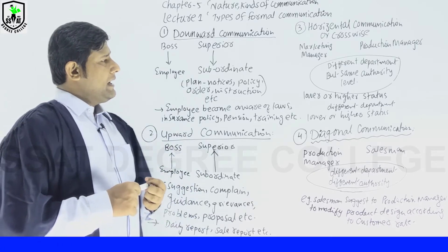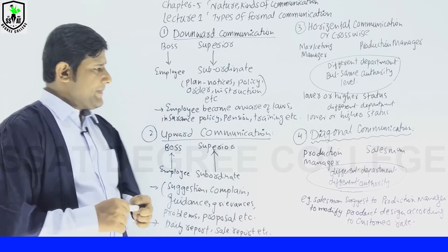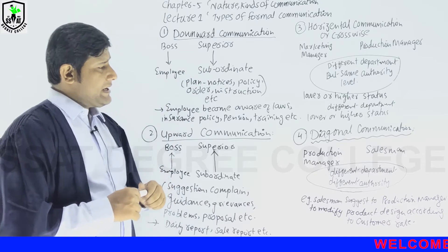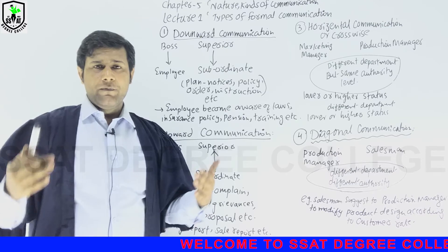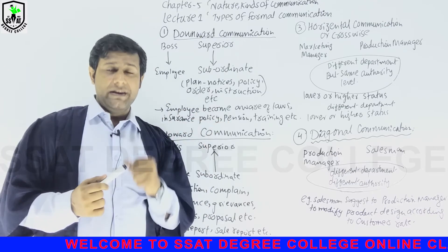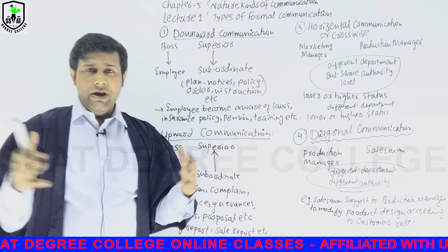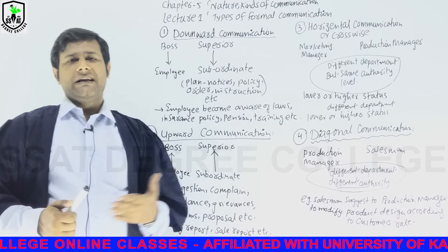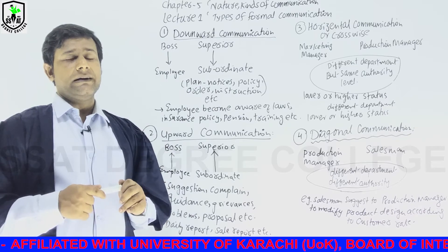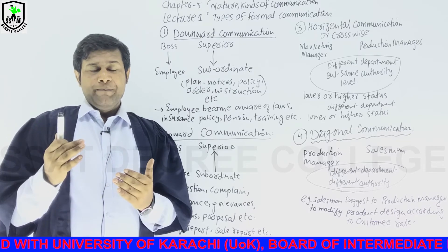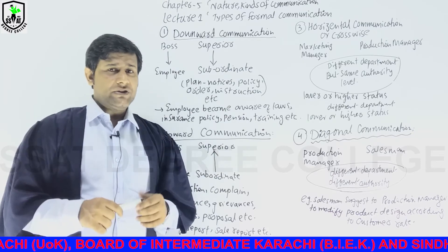Number four is diagonal communication. Diagonal communication means different departments and different authority levels. For example, a salesman and a production manager — different departments and different authority. When they communicate with one another regarding sales letters, sales promotion letters, inquiries, order letters, or any kind of business letter, they share ideas and work for the benefit of their organization.